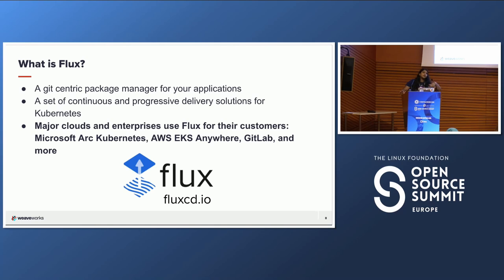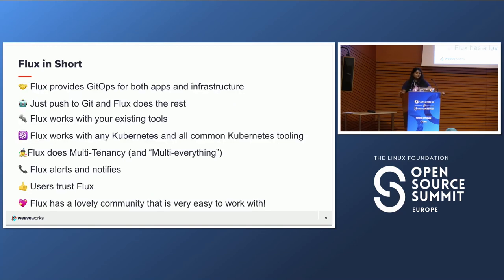Every 10 minutes it checks to make sure everything is applied and hard-applies everything. It really reduces developer burden because it removes the need for manual deployment processes. The command line tool is convenient — you can just set up on a cluster with what we call bootstrapping, and it allows you to access the custom resources that make up the API. We have a lot of major clouds and enterprises that use Flux, so you might be using us without realizing it — Microsoft Arc Kubernetes, AWS EKS Anywhere, and GitLab all offer Flux within their tools.